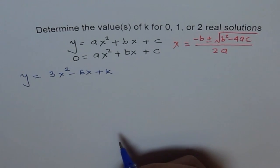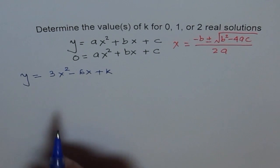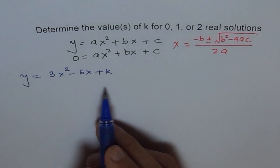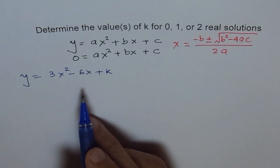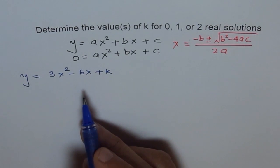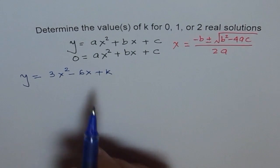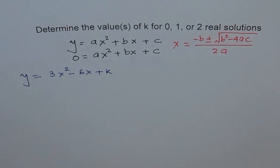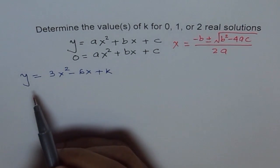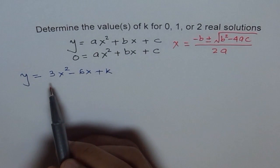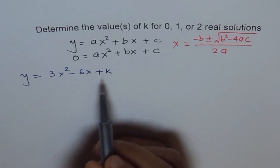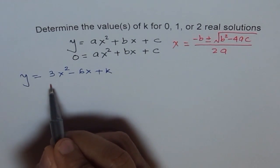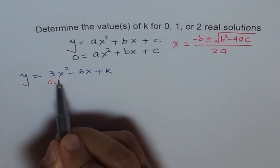I'm taking examples that give easy values to work with. In your test, you may deal with fractions and decimals — don't be afraid of that. This is only for understanding and easy explanation. Here, comparing with the standard form, a equals 3, b equals negative 6, and c equals k.